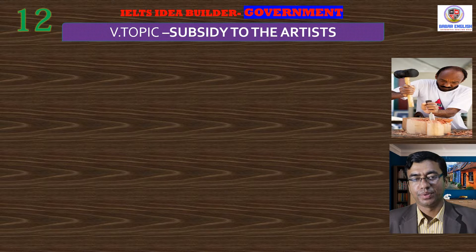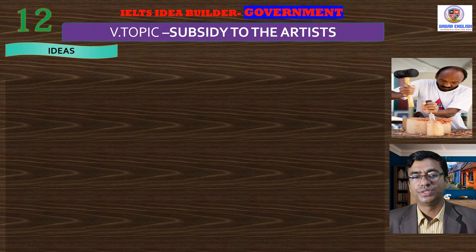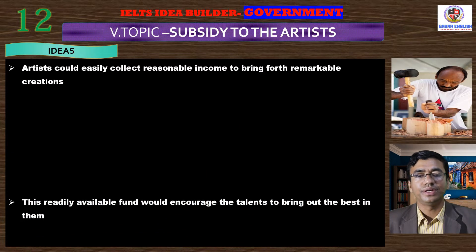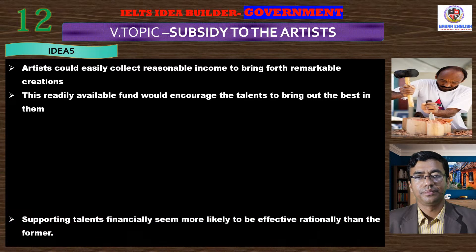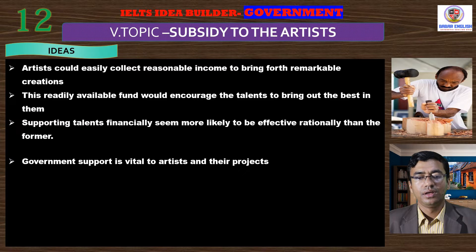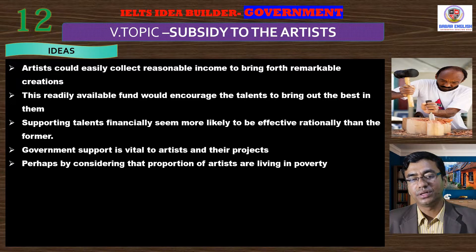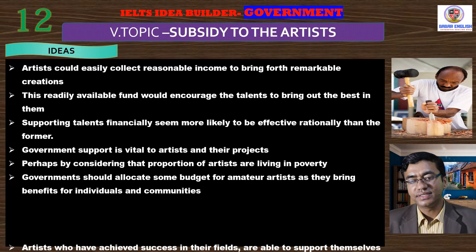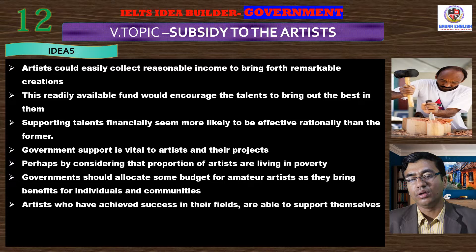Now we will move to our next subtopic of the day, that is subsidy given to artists. At first, we will look at some key ideas of this topic. At the very beginning, we can tell that artists could easily collect reasonable income to bring forth remarkable creations. This readily available fund would encourage talents to bring out the best in them. Supporting talents financially seems more likely to be effective than the former. Government support is vital to artists and their projects, particularly by considering the proportion of artists living in poverty. Government should allocate some budget for amateur artists as they bring benefit for individuals and communities. Artists who have achieved success in their fields are also able to support themselves.